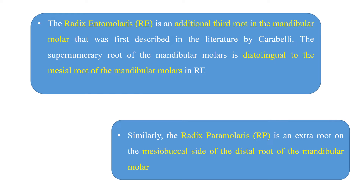Now, radix entomolaris and radix paramolaris — you need to know the difference between these two terms. Radix entomolaris, first described by Carabelli, is an additional third root in the mandibular molar. This supernumerary root is located distolingual to the mesial root. Radix paramolaris, on the other hand, is an extra root located on the mesiobuccal side of the distal root of the mandibular molar.